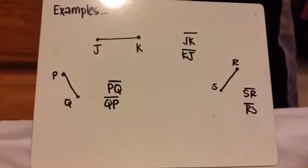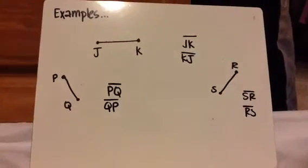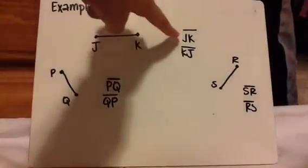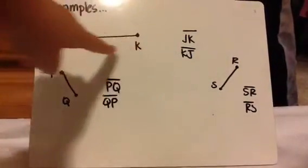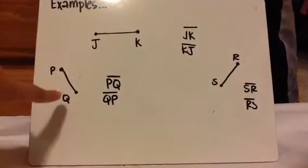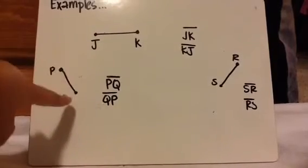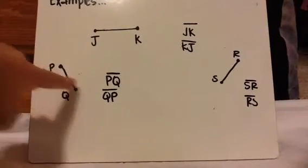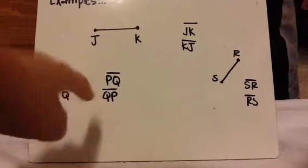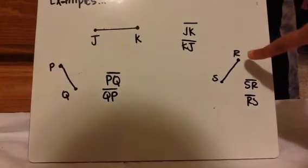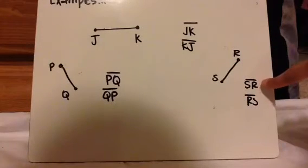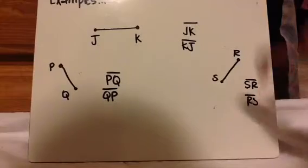Let's look at some examples. We know this is a line segment because of the two dots, the two points. So you call it line segment JK, or line segment KJ. Here's another one — we know it's a line segment because there are no arrows and there are two points only, so line segment PQ or line segment QP. Here's the last one — we know it's a line segment again because of the points and no arrows, so line segment SR or line segment RS.